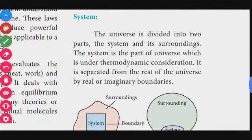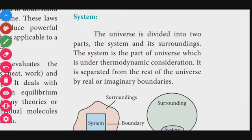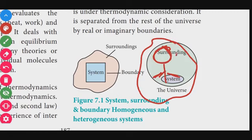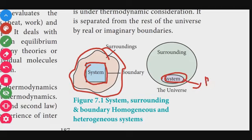The universe is divided into two parts: the system and the surroundings. The system is the part of the universe under thermodynamic consideration. The system has a boundary, and everything outside that boundary is called the surroundings. The boundary separates the system from the surroundings.